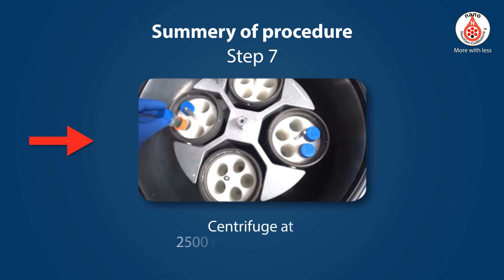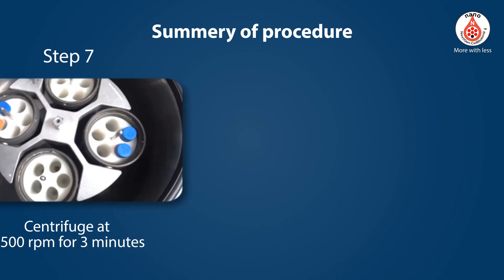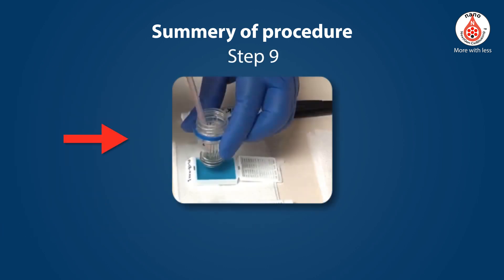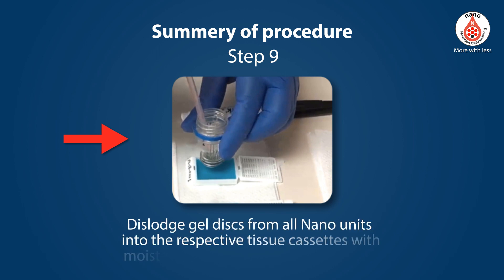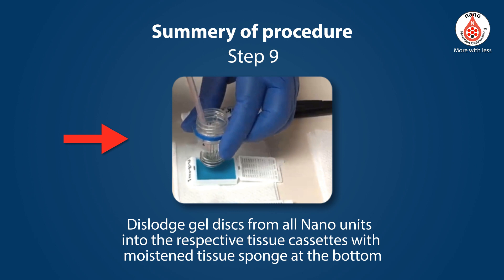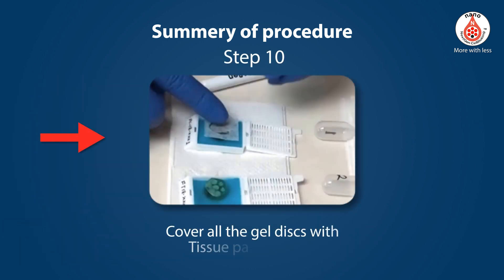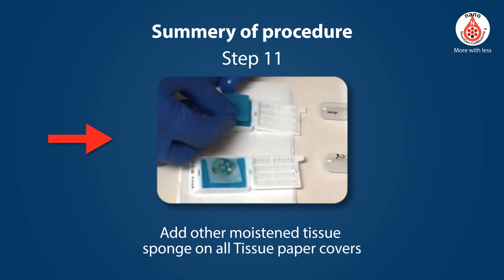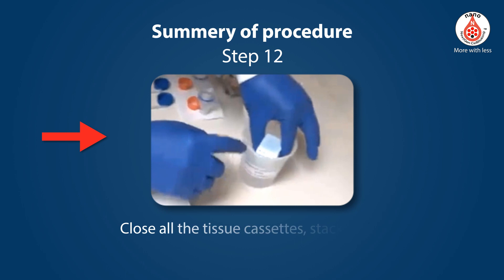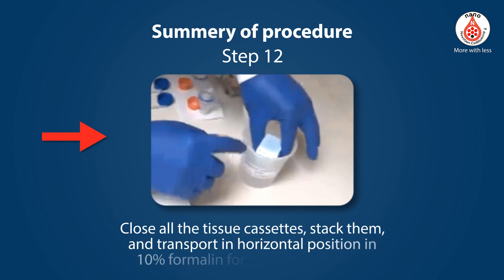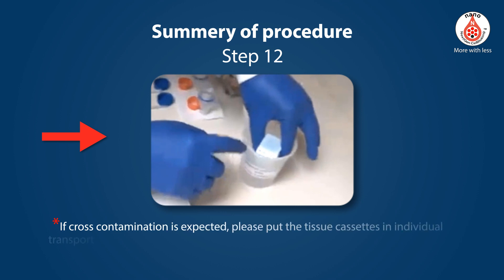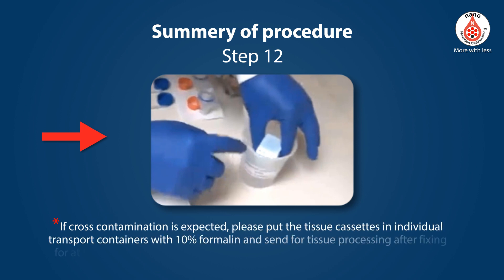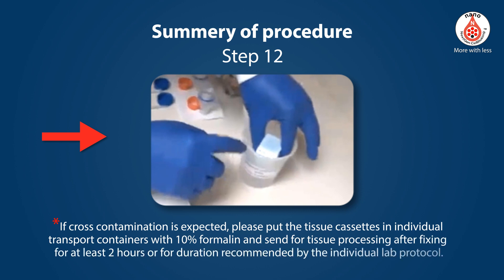Step 7: Centrifuge at 2500 rpms for 3 minutes. Step 8: Discard the supernatant. Step 9: Dislodge gel discs from all nano units into the respective tissue cassettes with moistened tissue sponge at the bottom. Step 10: Cover all the gel discs with tissue paper covers. Step 11: Add another moistened tissue sponge on all tissue paper covers. Step 12: Close all the tissue cassettes, stack them, and transport in horizontal position in 10% formalin for tissue processing. If cross-contamination is expected, please put the tissue cassettes in individual transport containers with 10% formalin, and send for tissue processing after fixing for at least two hours, or for the duration recommended by the individual lab protocol.